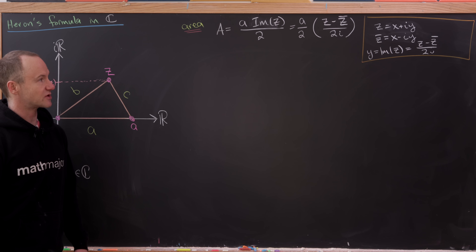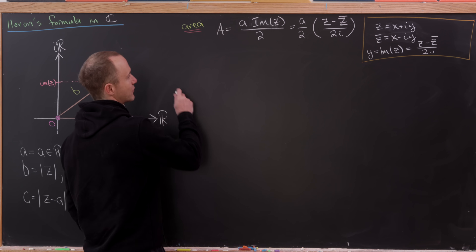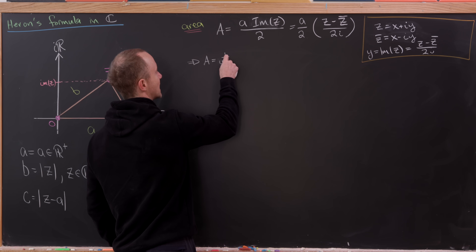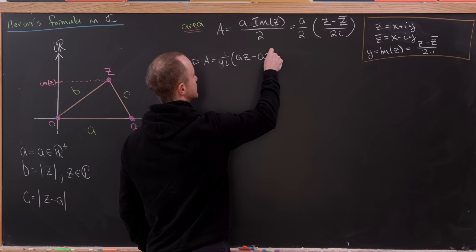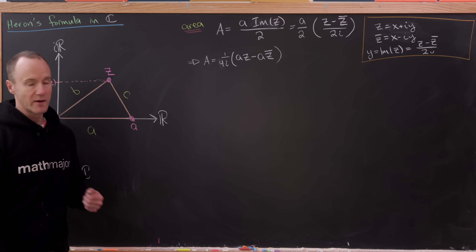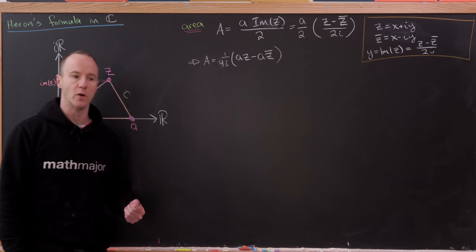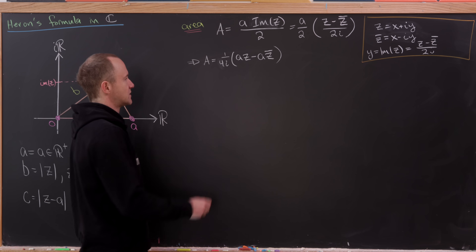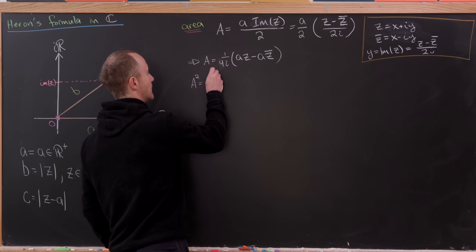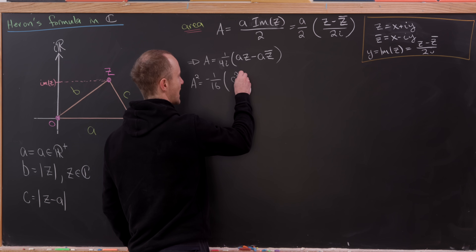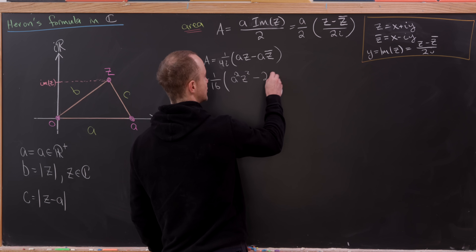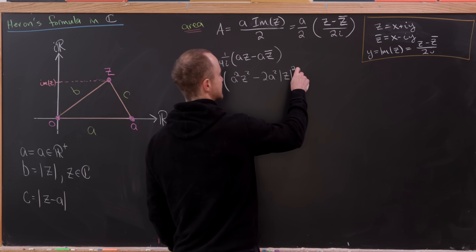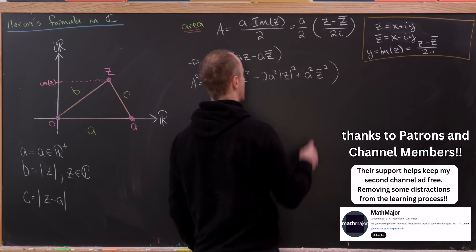Next, we factor the 2i out and distribute A through, giving us: Area equals 1 over (4i) times (AZ minus A·Z̄). Now we square both sides — recall that Heron's formula has a square root, so we'll build the squared version and take the square root at the end. Squaring gives: Area² equals −1/16 times (A²Z² − 2A²|Z|² + A²Z̄²), since Z times Z̄ equals |Z|².